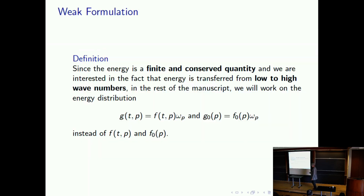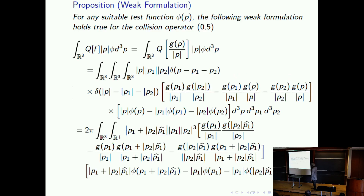We have to do the weak formulation first. We look at the equation for G, multiply by some test function phi, integrate the collision term, and we get this expression. The issue of finding a quantity which is monotonic is really the key for solving this kind of problem — the same reason Boltzmann got his name on the equation, because he proved the H-theorem showing that entropy is monotonically increasing.